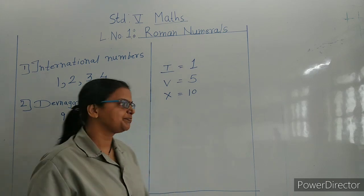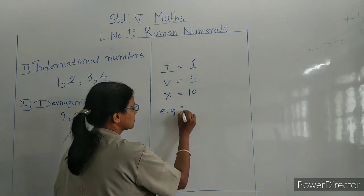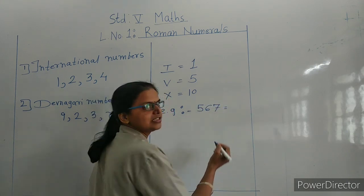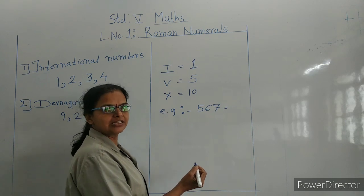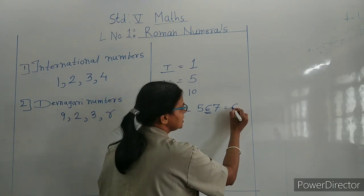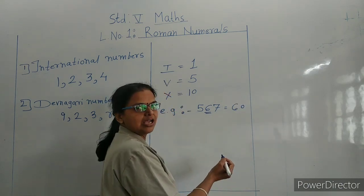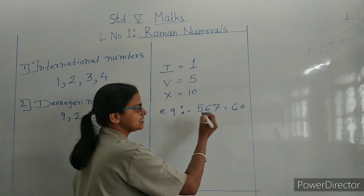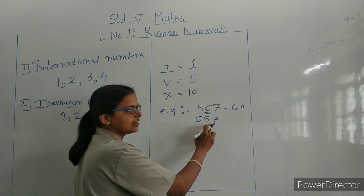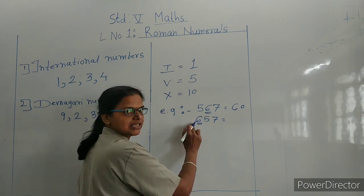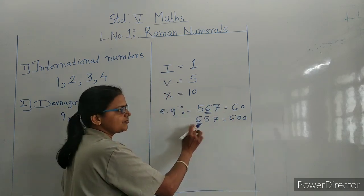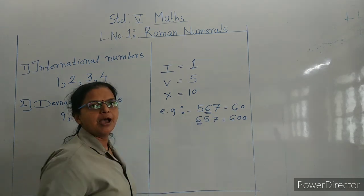For example, we take the number 567. In this number, 6's place is 10, so 6's place value is 60. Now I am changing 6's place. The number is 657. In this number, 6's place value is 600.